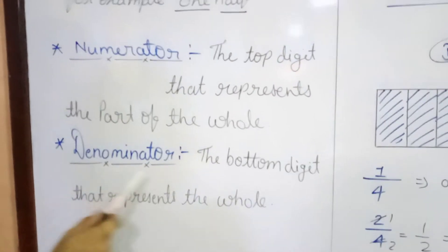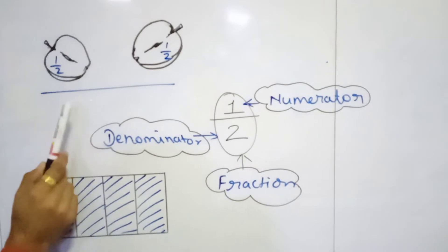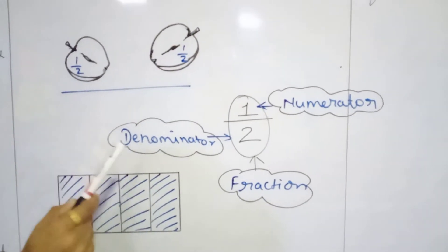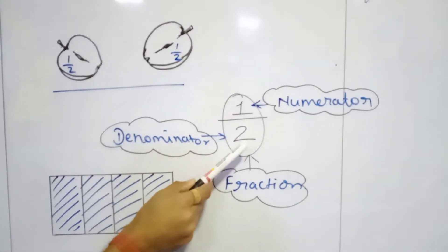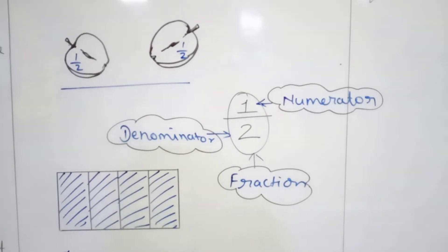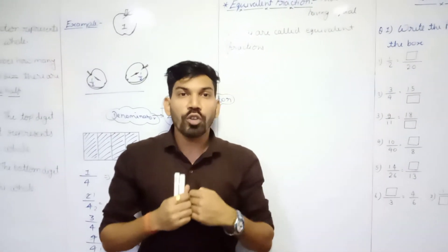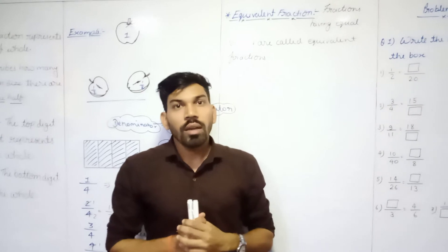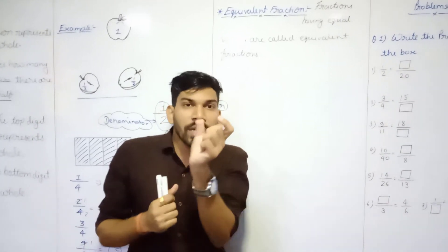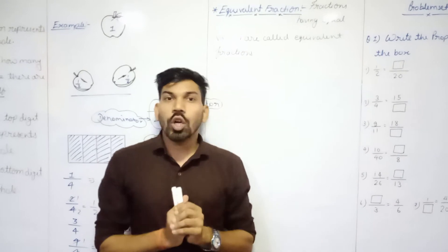Let's see the denominator. The bottom digit that represents the whole is called the denominator. Here we have 2 pieces of an apple - that is the whole, meaning the total. We have 2 pieces in total and that digit 2 is at the bottom, so it is called the denominator. Whenever we have any number less than 1 that we want to count, we use a fraction - a part of the whole. The digit at the top representing the part is the numerator, and the digit at the bottom representing the whole is the denominator.